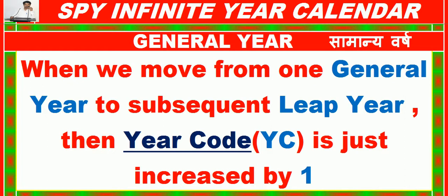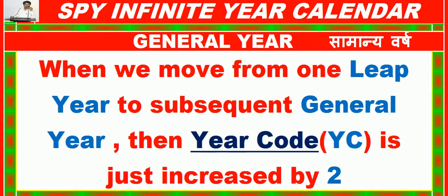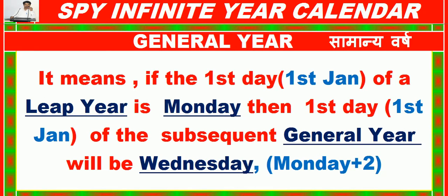When moving from one general year to the next general year, the year code YC increases by 1. When moving from a general year to the subsequent leap year, 1st January advances by 1 day (Monday + 1). When moving from a leap year to the subsequent general year, the year code increases by 2, so 1st January advances to Wednesday (Monday + 2).